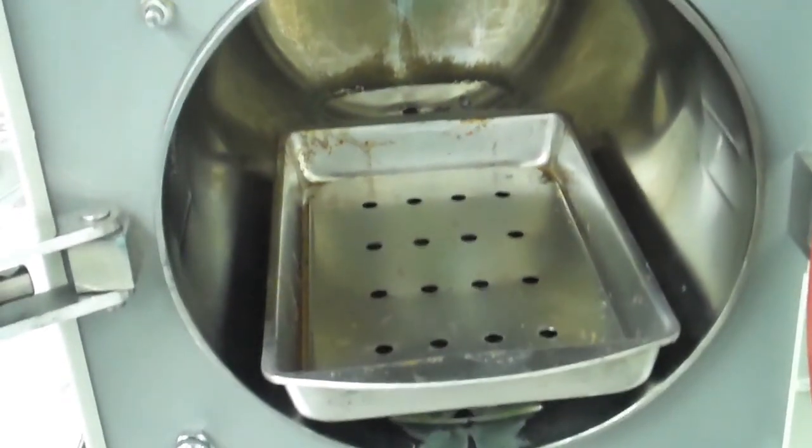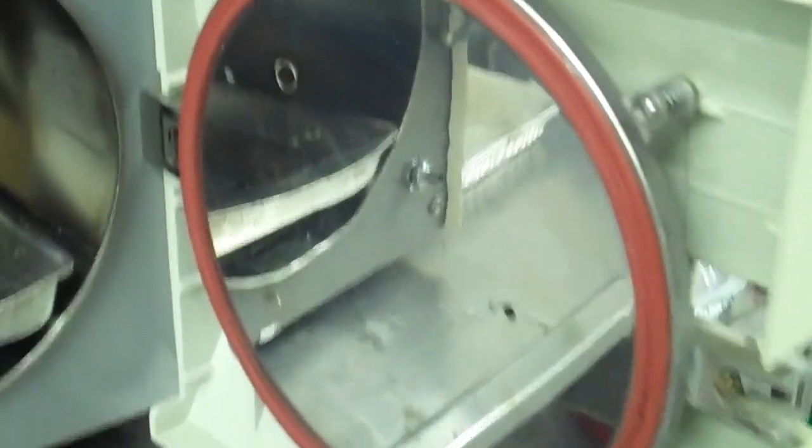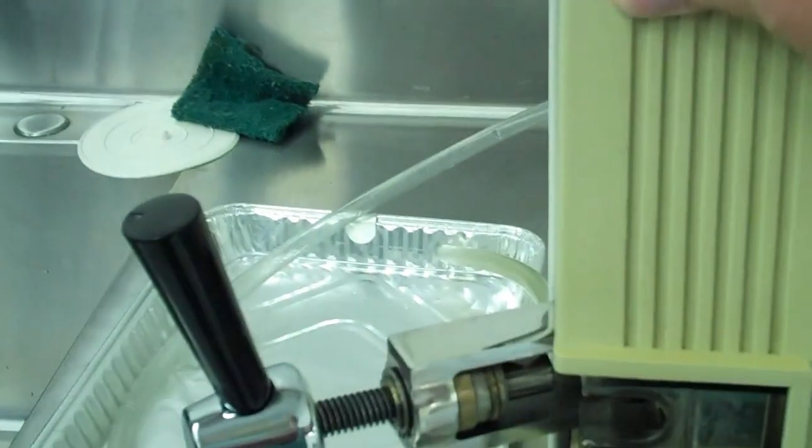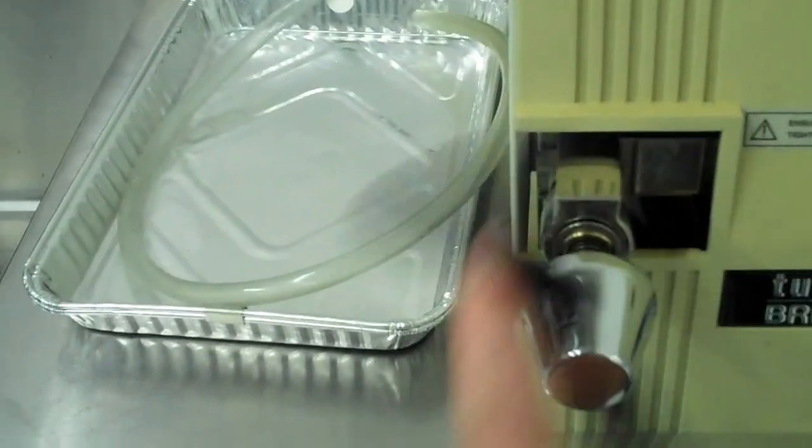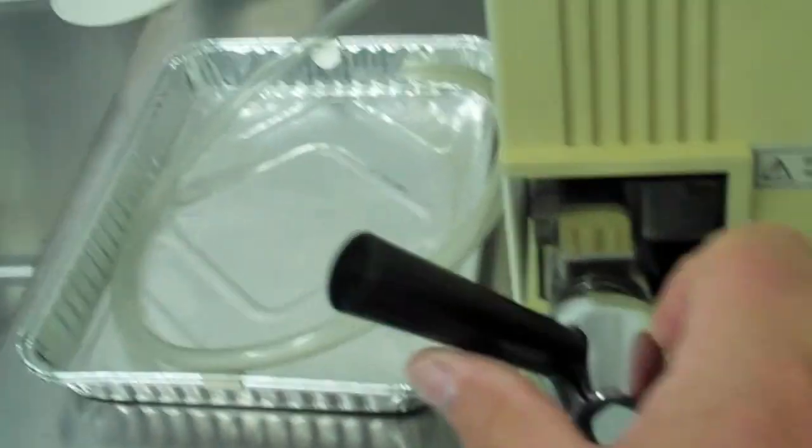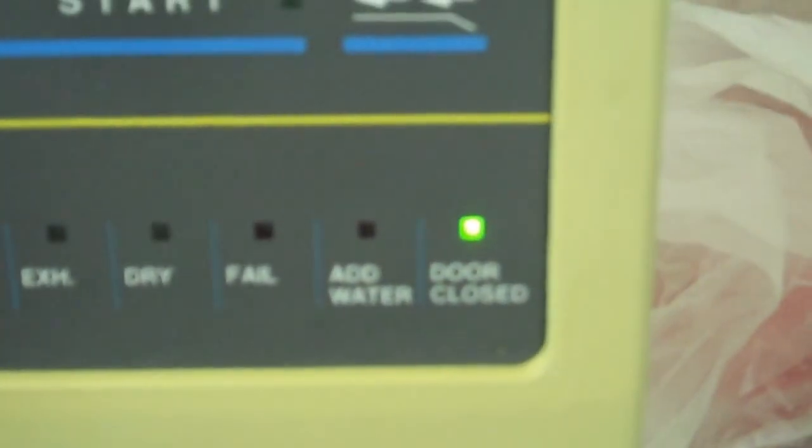Since this is a pressure cooker, you can see there's a door with a gasket just like a pressure cooker. When you close the door, you probably heard that click. It doesn't show door closed yet, so then we spin down the handle and you heard that click. That click says door closed.